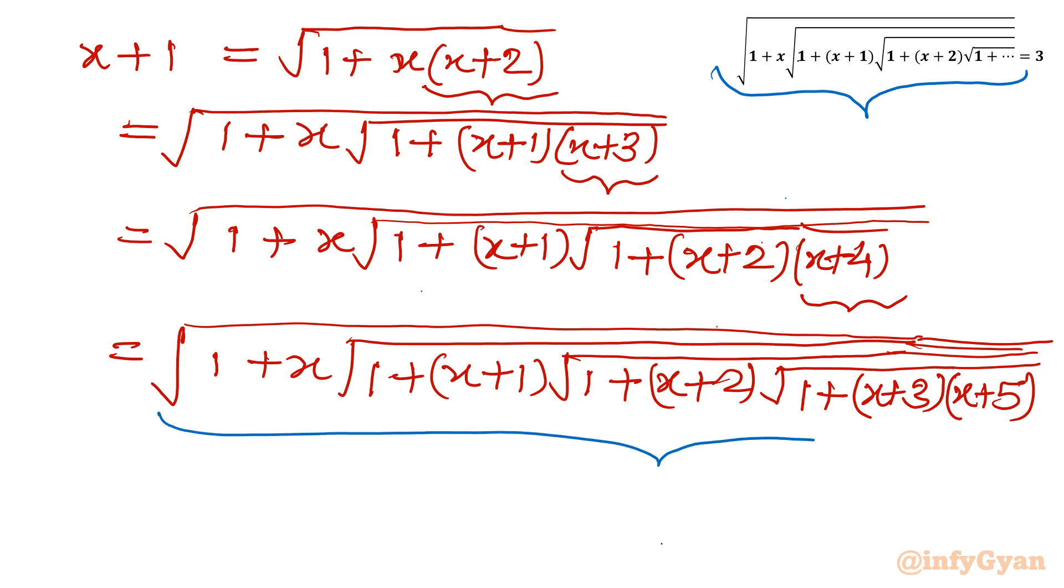This will be your LHS if you will see. If you will proceed from here also - x plus 5, you will write square root of 1 plus x plus 4 times x plus 6. You will continue, you will be getting your LHS. So in this place, in LHS place, I will write it is x plus 1.